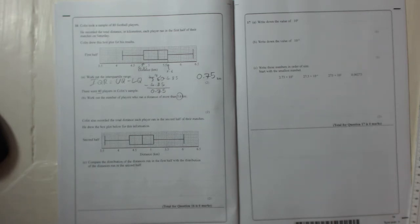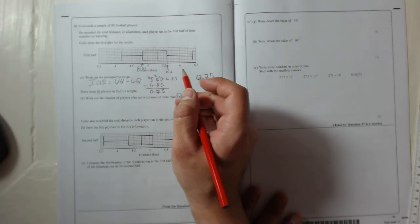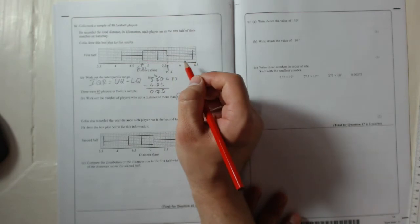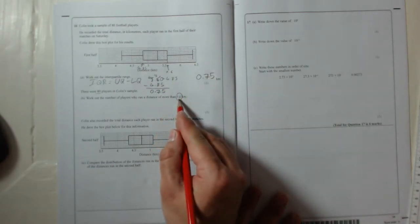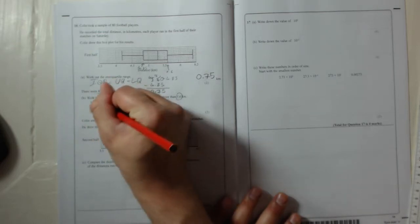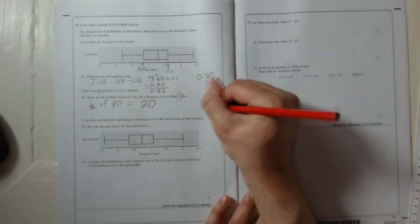So that means if 5.6 is the upper quartile, that's three quarters through the results. It's a quarter away from the maximum. So if three quarters of people ran 5.6 or less, that means a quarter of them ran more than 5.6. So we just want a quarter of 80, which equals 20. And that's all it is.